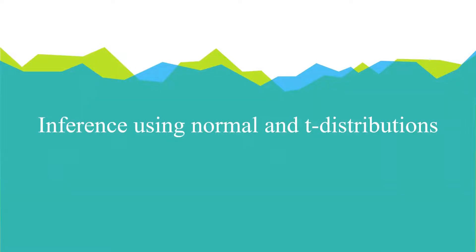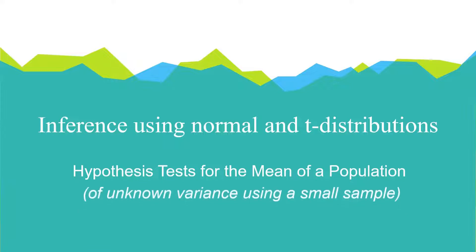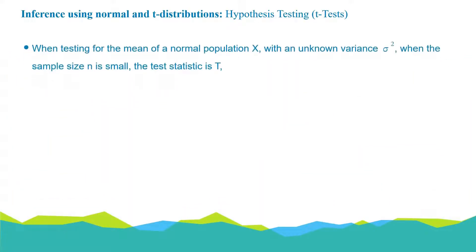In this lesson, we're going to be looking at how we can carry out hypothesis tests for the mean of a population of unknown variance and where we have a small sample size. When testing for the mean of a normal population X with unknown variance σ², when the sample size n is small, the test statistic is T, where T = (x̄ - μ)/(s/√n), and T follows a t-distribution of n-1 degrees of freedom.